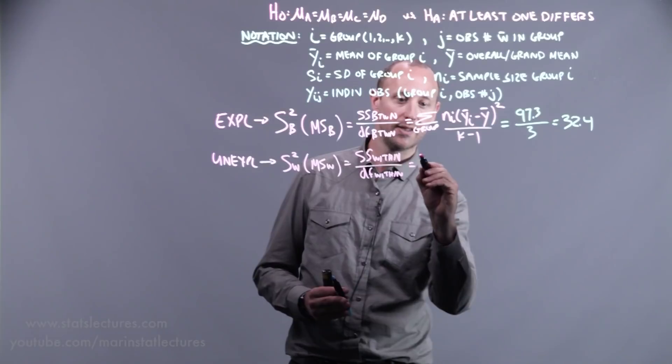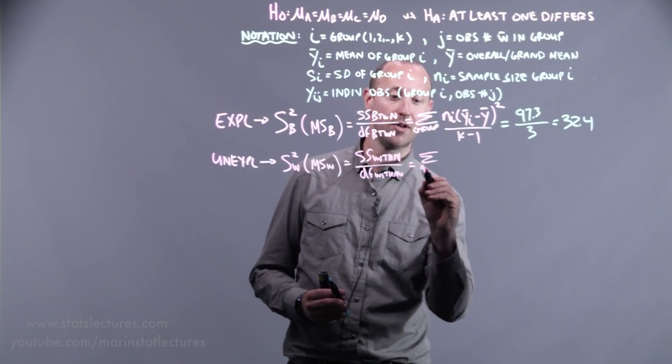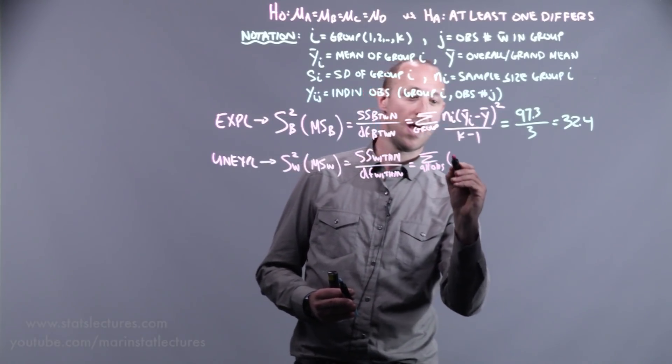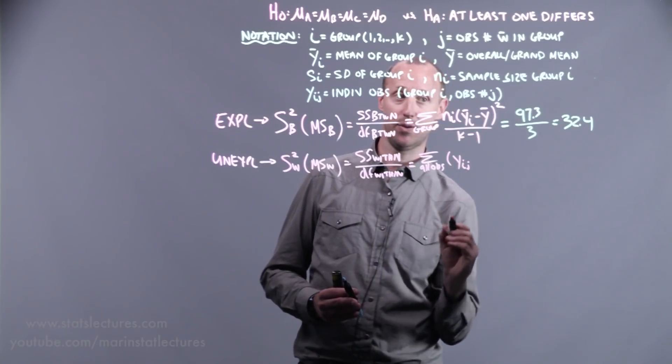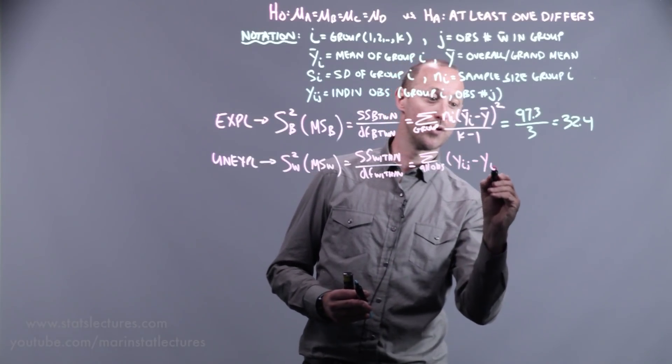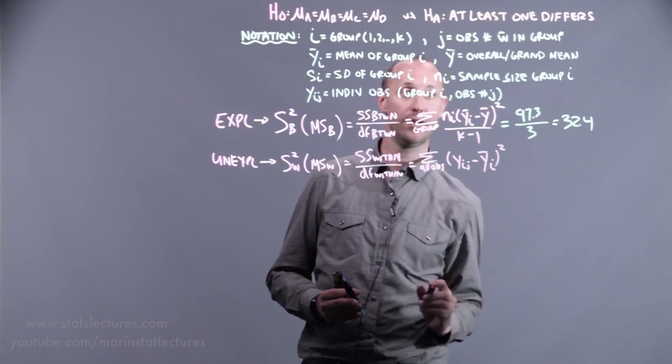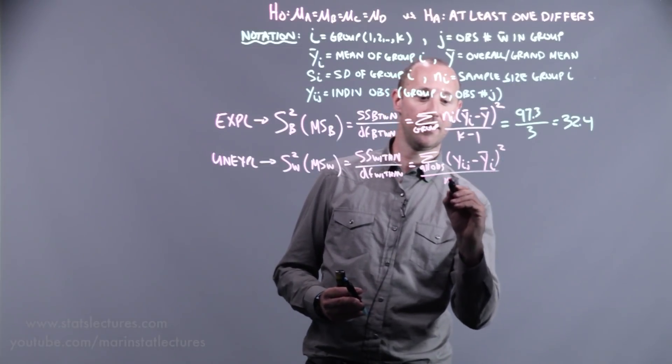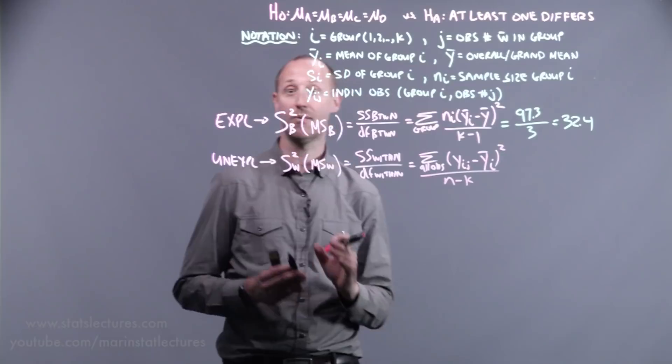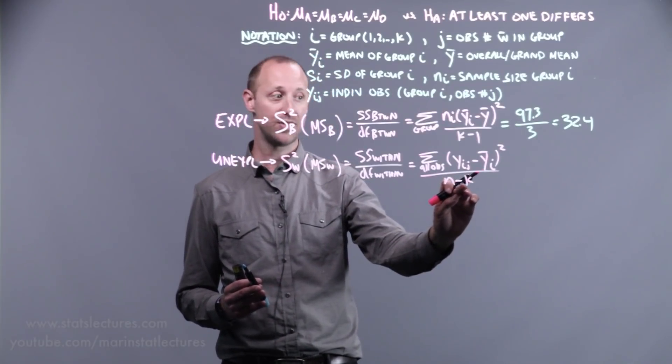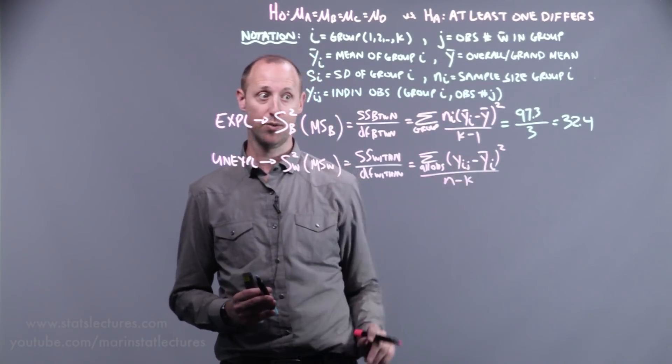And formulaically, we can think of summing over all observations. How far is each individual from their group specific mean, squared, divided by the degrees of freedom. We have n observations, and we lose k degrees of freedom by estimating the k group means.